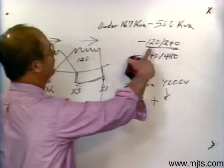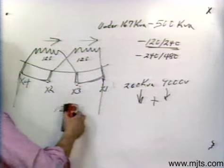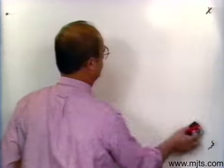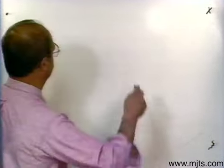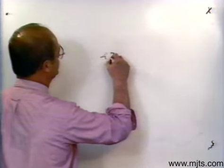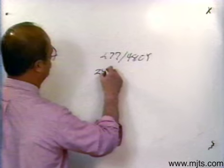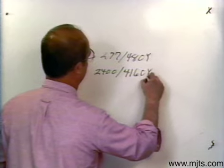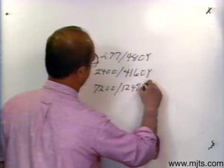All of this deals with a low side rating of 1-to-2, giving either a 3 or 4-bushing transformer. Now let's go to another rating you would find on the low side. You would see ratings such as 277/480Y, or 2400/4160Y, or 7200/12470Y.